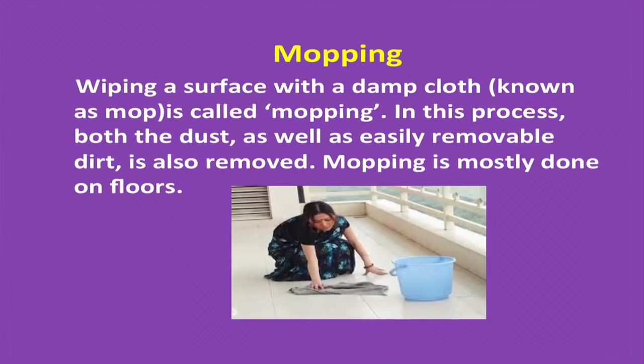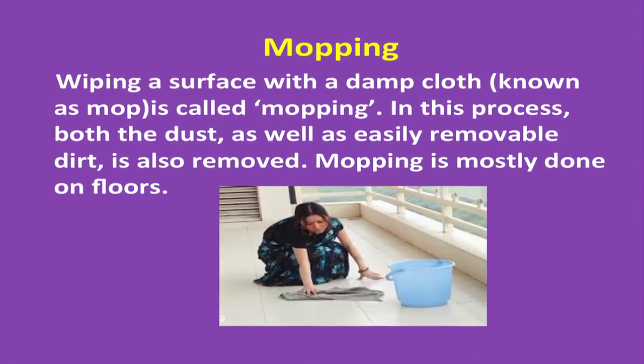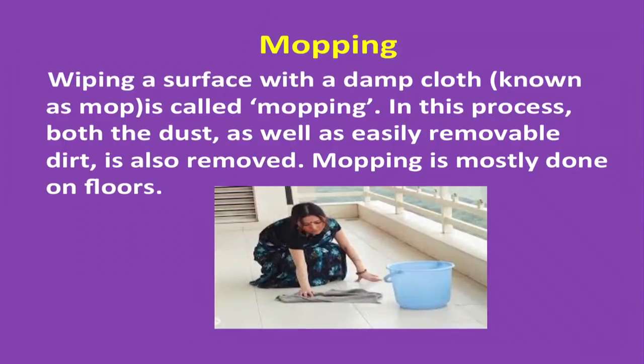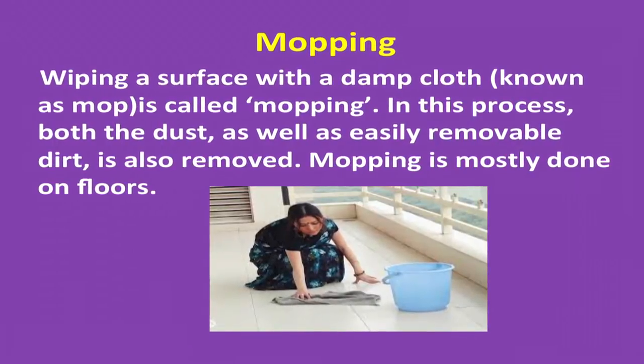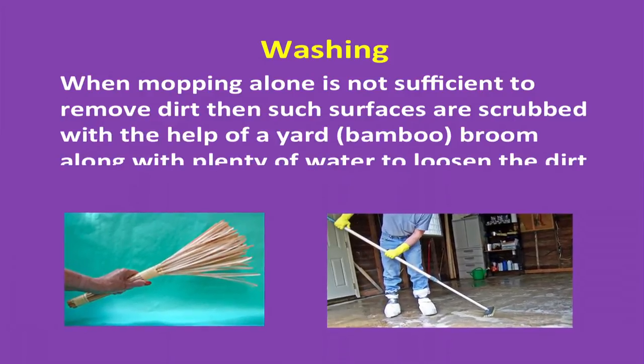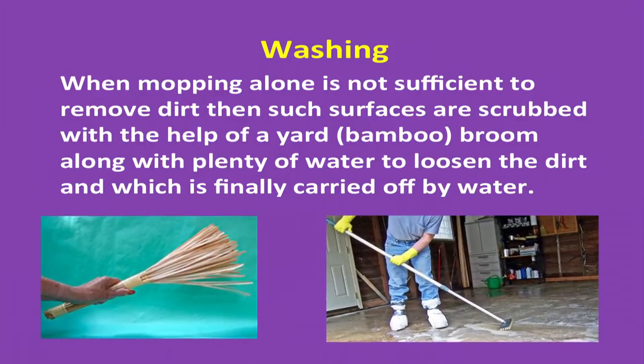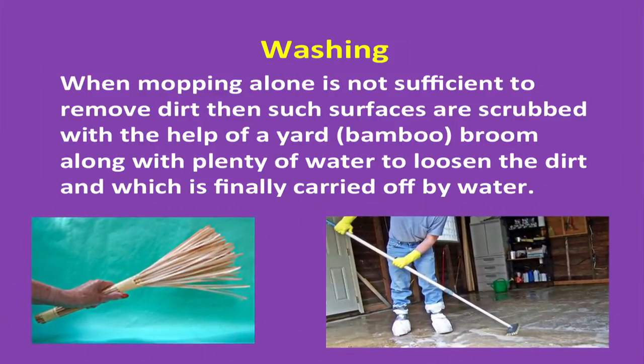Wiping a surface with a damp cloth, known as a mop, is called mopping. In this process, both the dust as well as easily removable dirt is also removed. Mopping is mostly done on floors. When mopping alone is not sufficient to remove dirt, then such surfaces are scrubbed with the help of a yard bamboo broom, along with plenty of water to loosen the dirt, which is finally carried off by water.